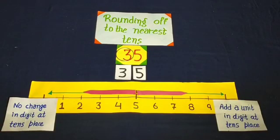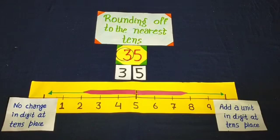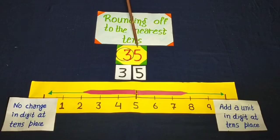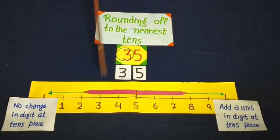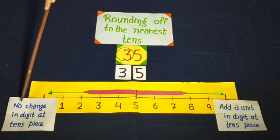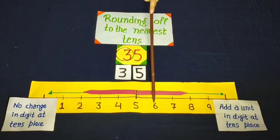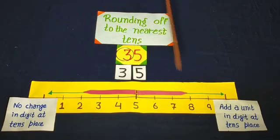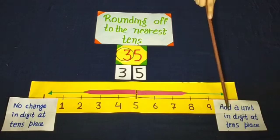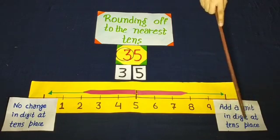Students, we do rounding off to the nearest tens. The number is 35. Dear students, when we do rounding off to the nearest tens, we look at the digit at the ones place. If the digit is 4, 3, 2, or 1 at the ones place, there is no change in the digit at the tens place. If the digit is 5, 6, 7, 8, or 9 at the ones place, add a unit to the digit at the tens place.